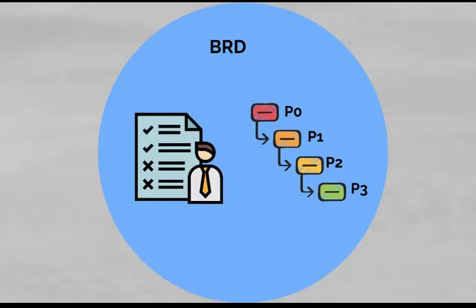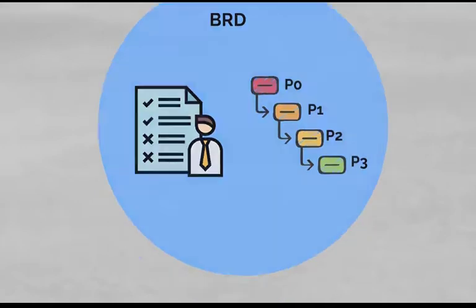The second tip is categorizing user stories with priority ranks, such as P0, P1, P2, and outlining the minimum viable product for launch. This helps the tech teams to plan the development accordingly. The third tip is keeping a glossary section with information on any used abbreviations and terminologies. The fourth tip is including wireframes and any diagrams wherever applicable for tech teams to visualize the product. Last but not the least, including a summary section of the overall product interaction to set the stage really helps.